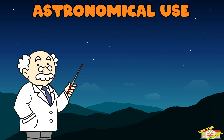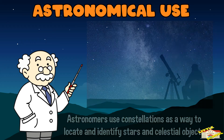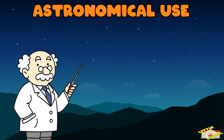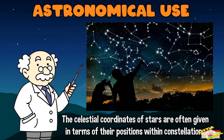Astronomical use: astronomers use constellations as a way to locate and identify stars and celestial objects in the night sky. The celestial coordinates of stars are often given in terms of their positions within constellations.